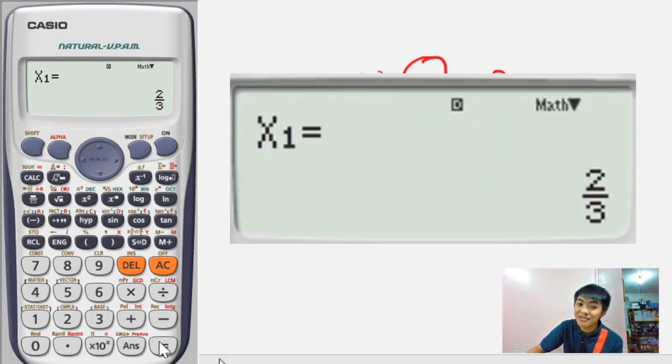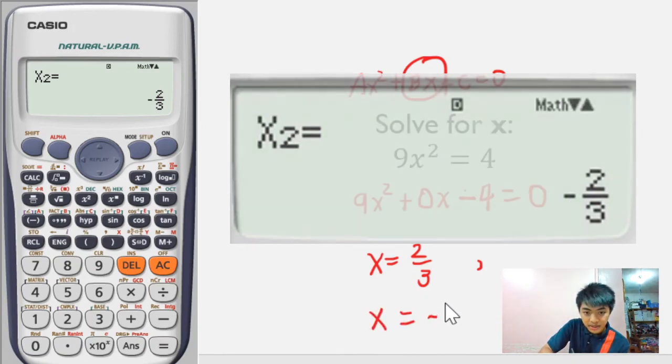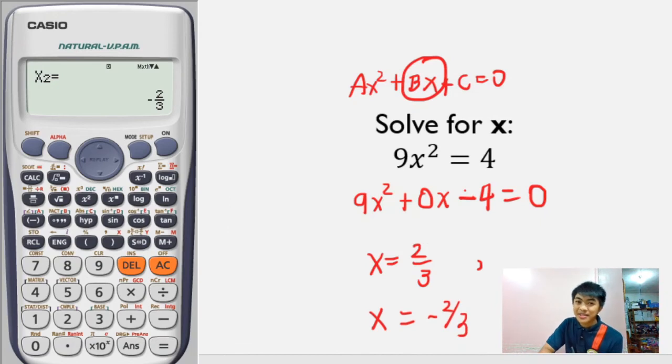Yung A natin is 4, yung B natin is 5, and yung C natin is negative 9. Press equals, press equals, at lalabas na yung x value. Meron na, si first x value is 1, which is ito nasolve na natin. At meron naman yung second value, which is negative 9 over 4. Very easy. Your calculator can do much more than you think.